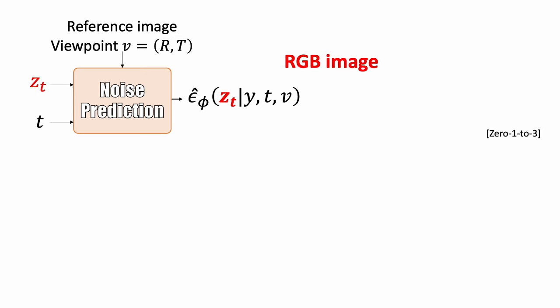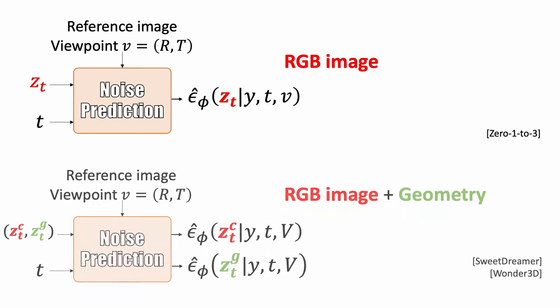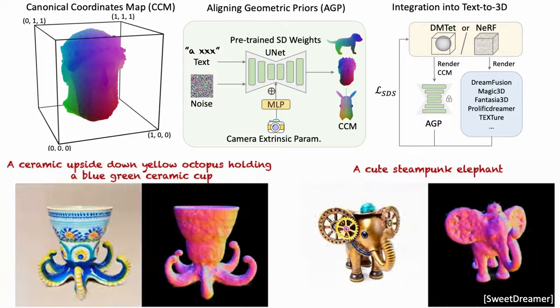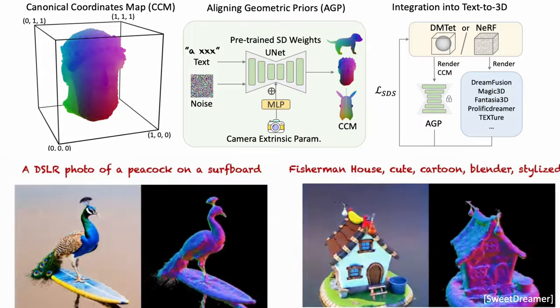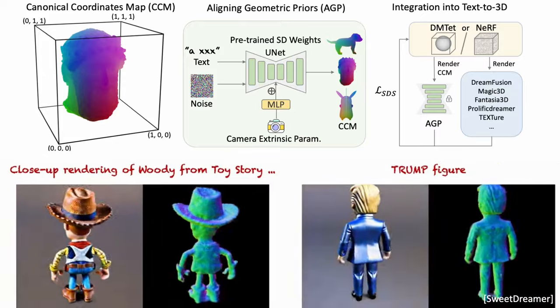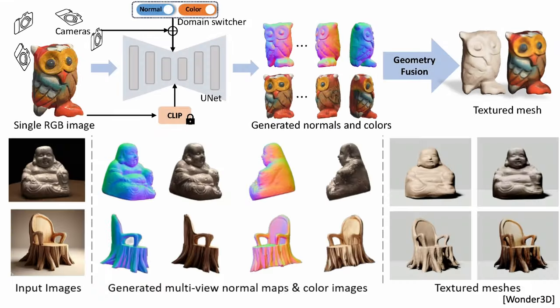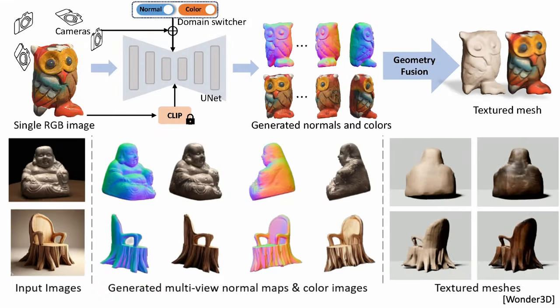Here's another work with a similar idea but conditioned on a 2D image. Okay, what else can we learn from the 3D dataset? In addition to rendering RGB images, we can also render some geometric information. This work trains a view-conditional diffusion model to synthesize some geometric priors. The prior can then be used to improve existing text-to-3D models. Another example is to synthesize surface normal maps at multiple viewpoints.